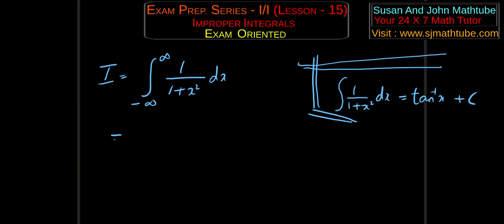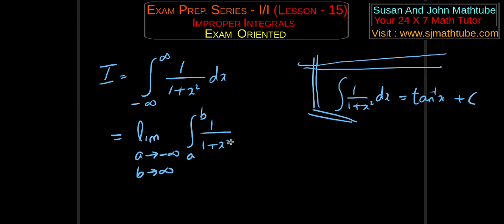On the other side, what you do is change the Type 1 improper integral into a limiting problem. So I am going to write: limit as a tends to minus infinity and b tends to infinity of the integral from a to b of 1/(1 + x²) dx. So here we go — we changed it into a limiting problem.